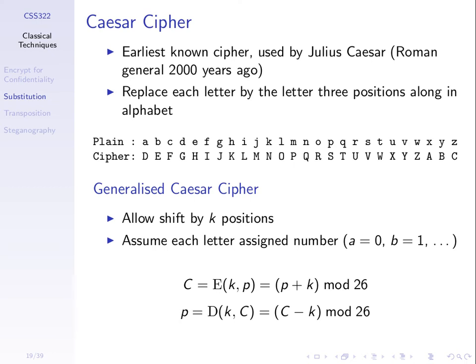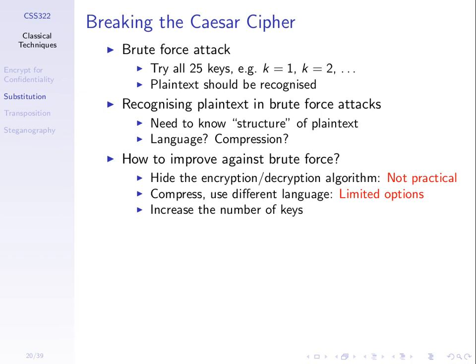Of our classical ciphers, Caesar cipher is the easy one we saw, or the easiest so far. We saw brute force is simple — try all keys, all 26 keys, and one of those potential plaintexts will make sense and you'll have the key and the plaintext.